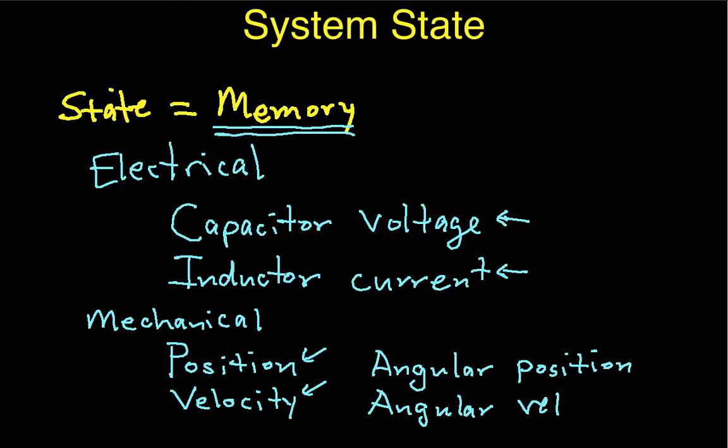So, I can't have an object that's at position zero, and then all of a sudden jumps to position one without going between all the intervening positions. It just doesn't work, except in Star Trek. So, again, you can see that position and velocity, these are things that have memory.